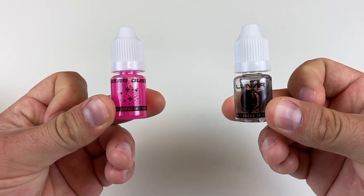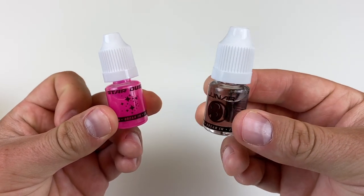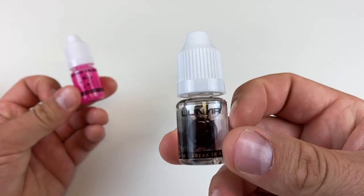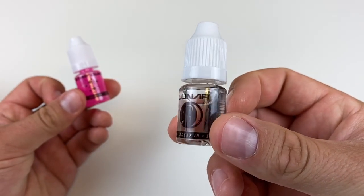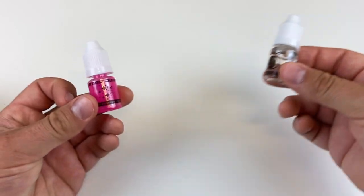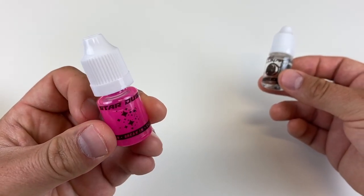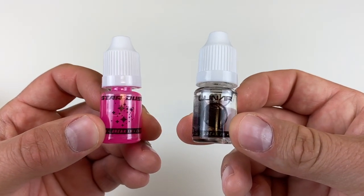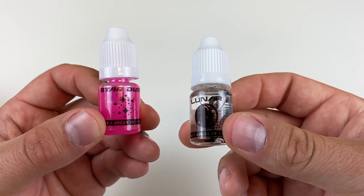All right, last, we have some Stardust and Lunar lubes. Just for a heads up, both of these are considered the fastest kinds of lubes SpeedCubeShop offers. Lunar is the fastest silicone-based lube, and Stardust is the fastest water-based lube. For more detailed information on these lubes, I encourage you to head over to speedcubeshop.com.